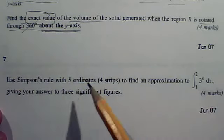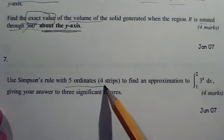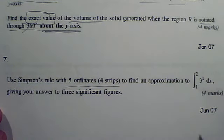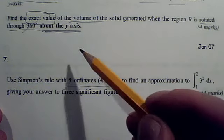OK, so here we've got Simpson's rule with five ordinates, which they tell you is equivalent to four strips. And here's the graph.